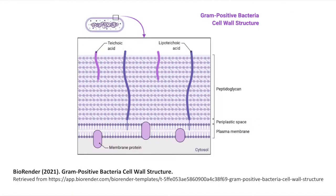On the other hand, positive organisms, as shown in this diagram, have a very thick layer of peptidoglycan and so will retain far more of the crystal violet iodine complex when exposed to organic solvents.